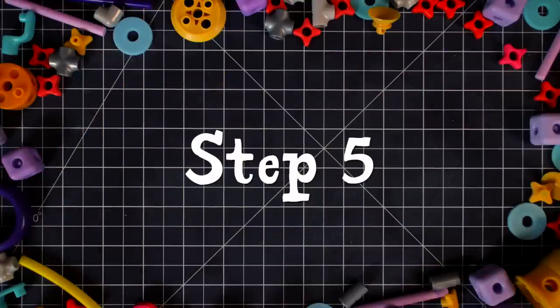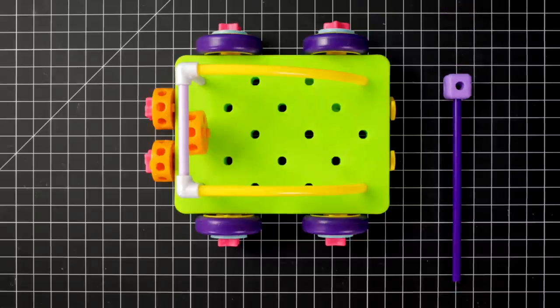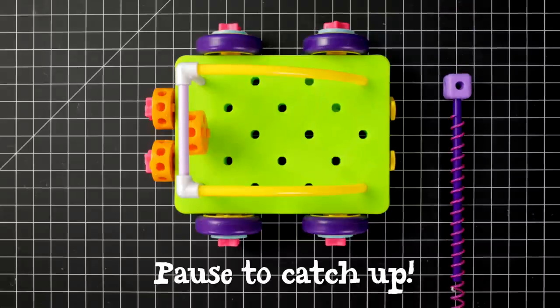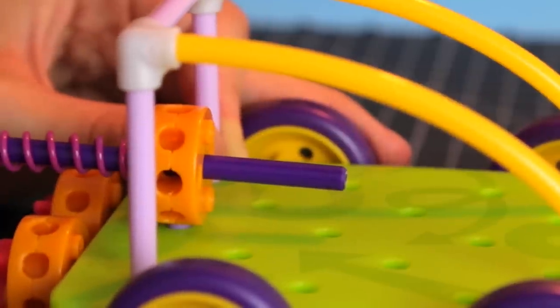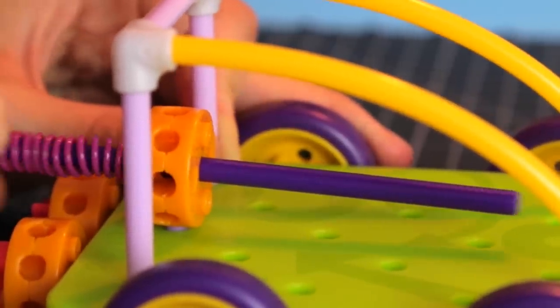Step 5. Connect a block to a long axle then slide on the spring. Push the axle through the wheel hub launcher like this. Now just hold on tight and let her go.